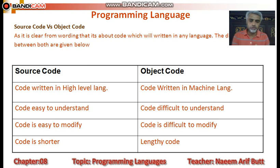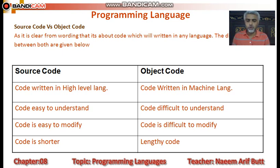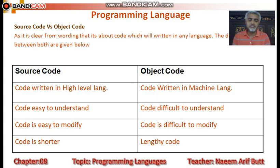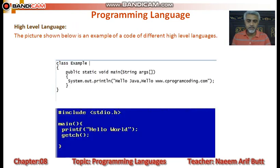Object code جو zero-one کا code ہے، اس میں اگر changing کریں تو وہ کافی مشکل ہوگا۔ Source code ہمیشہ shorter ہوتا ہے — آج کل efficient programming کا مطلب یہ ہے کہ چھوٹے سے چھوٹا code اور زیادہ سے زیادہ instructions perform کروانا۔ لیکن یہی shorter source code جب zero-one میں جاتا ہے تو ایک بڑی string بن جاتی ہے — object code lengthy ہوگا اور source code short۔